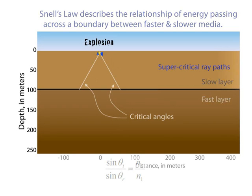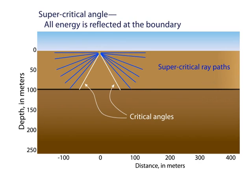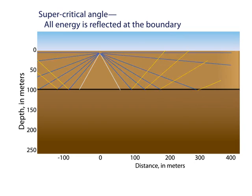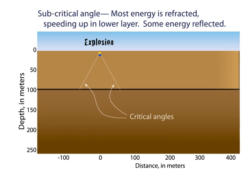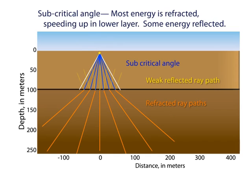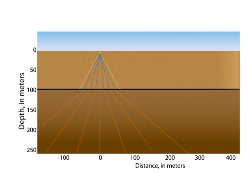Ray paths aimed at the layer at more than a critical angle will have all the energy reflected back to the surface — this is known as supercritical angle. Rays that strike the boundary at less than the critical angle, subcritical ray paths, have most of the energy refracted, or bent, to travel at a shallower angle in the fast layer, with less energy reflected upward.